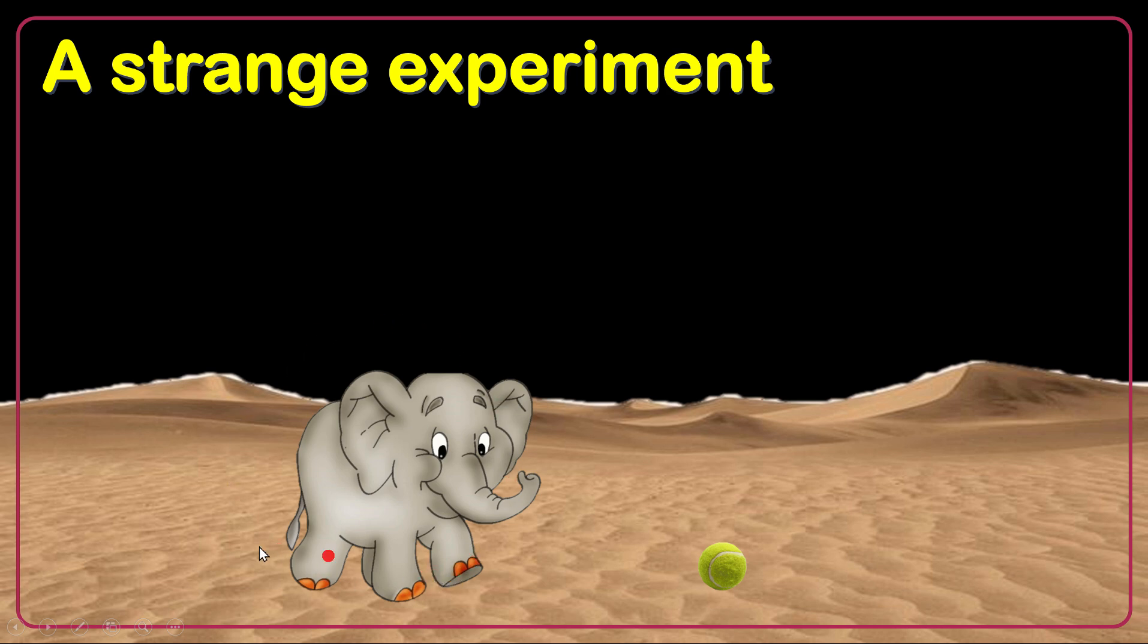As elephant is a heavier object, normally it's expected to fall down faster, but it's not true. Provided you neglect air resistance.